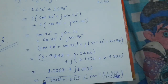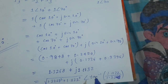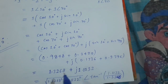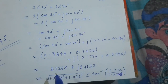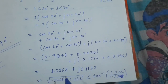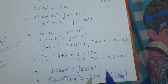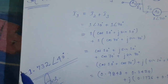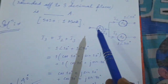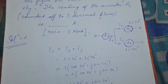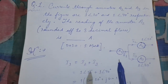Converting back to polar form: the magnitude is √(1.3268² + 1.1132²), and the angle is tan⁻¹(1.1132 / 1.3268). The magnitude works out to roughly 1.732, and the angle is approximately 39.9°, which can be written as 40°. Therefore, the answer is 1.732 at an angle 40°, and the current shown by ammeter A1 will be that value. This was Question number 1.